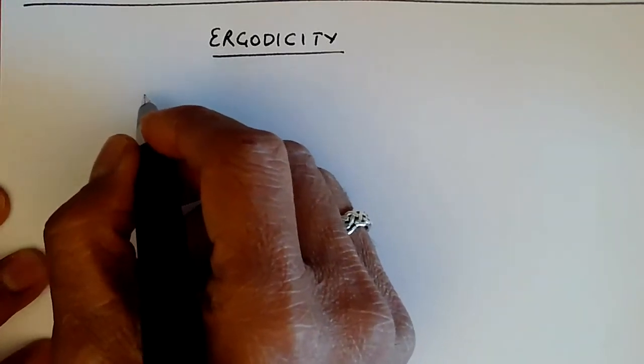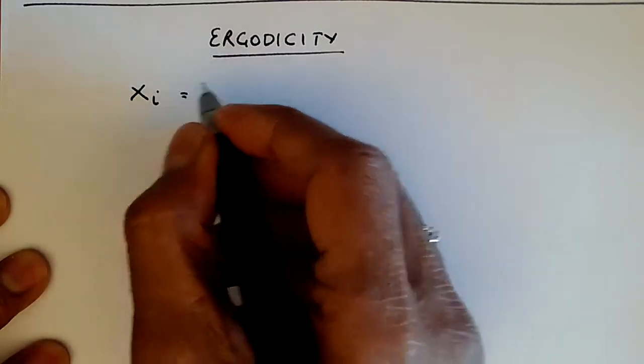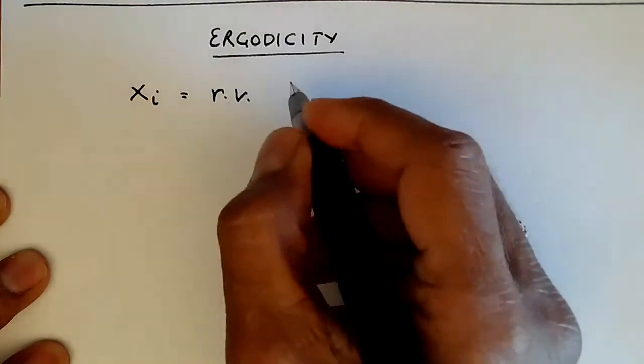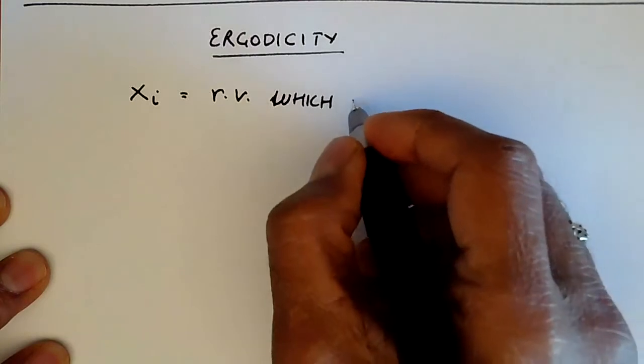So to be more precise, remember that xi is the random variable which represents the process at time step i.